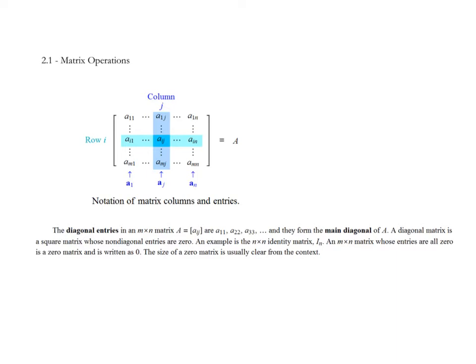We've mentioned in chapter 1 we have rows and columns. When we identify the locations within a matrix we use a lowercase a with a pair of subscripts: row i is the first subscript, column j is the second subscript. So a11 means first row first column, a13 means first row third column, a32 means third row second column. In an infinite sense we use dot dot dots: a1n for the nth column, and amn for the bottom right location in an m by n matrix.